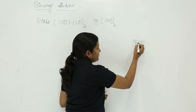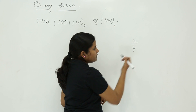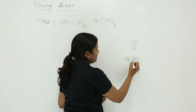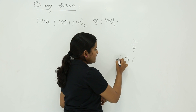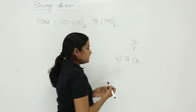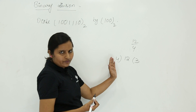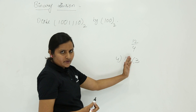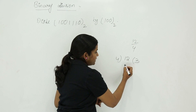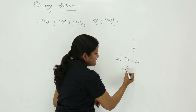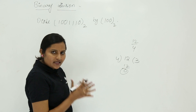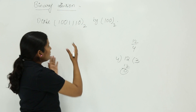For example, if you want to divide twelve with four, you take twelve and four, and four goes three times to form twelve — four times three is twelve. In the same manner you are going to perform binary division.